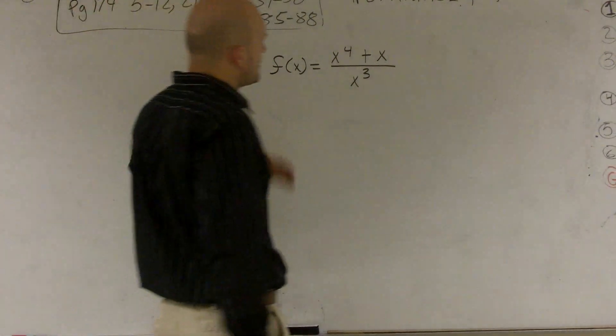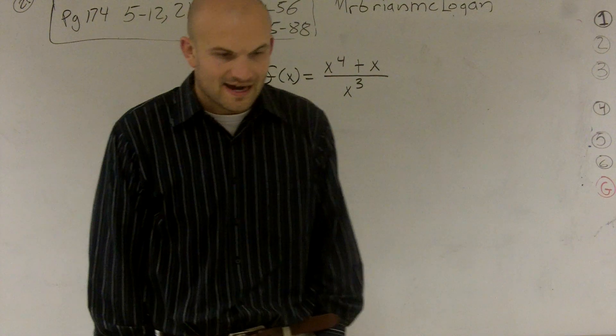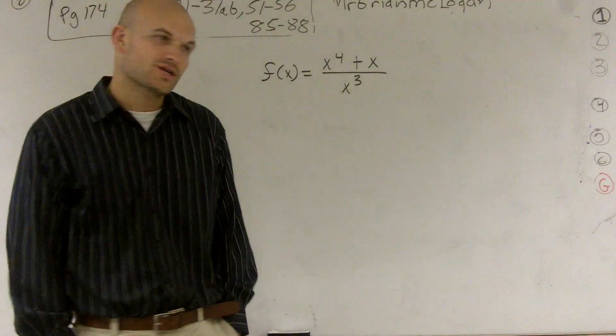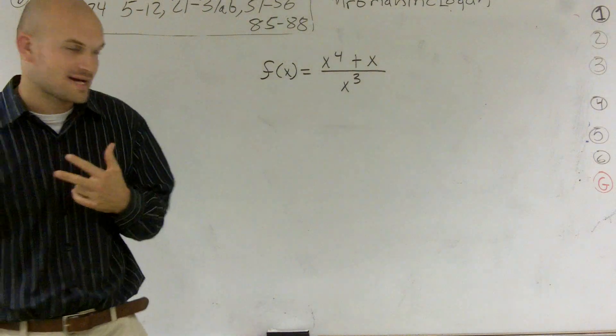All right, for this problem, what they're doing is they're going to ask us to find all of the asymptotes. So we need to figure out if there's vertical, horizontal, or maybe even a slant asymptote.